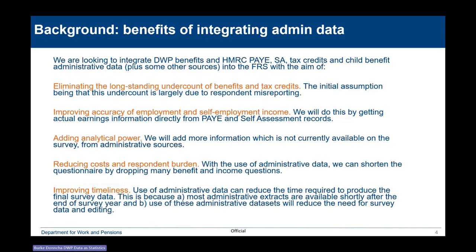We're looking to integrate all of the main DWP benefit admin sources, plus HMRC PAYE, self-assessment, tax credits, child benefit, plus some other more minor sources into the FRS, with the aim of eliminating the longstanding undercount of benefits and tax credits on the survey. Our initial assumption was that the undercount was largely due to respondent misreporting. We also want to improve the accuracy of employment and self-employment income by using PAYE and self-assessment records, and we can add analytical power by using more information from those admin sources. In doing that, we're looking to reduce costs and respondent burden, because if we make good use of admin data, we can shorten the questionnaire by dropping many of the benefit and income questions.